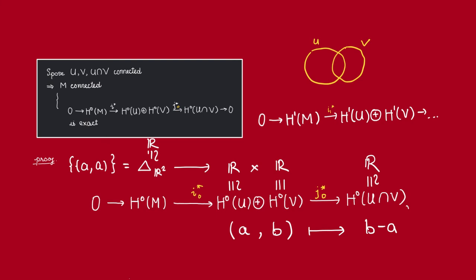Thus, we see that if U, V and their intersection is connected, then M itself must be connected. And this sequence in degree 0 must be exact. In particular, we can start the long exact sequence with the term H1.